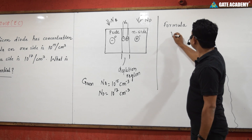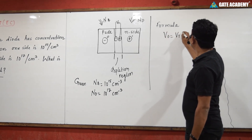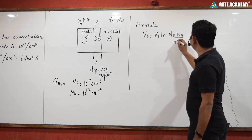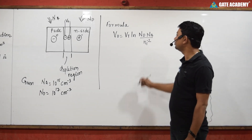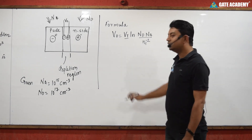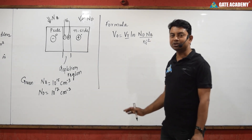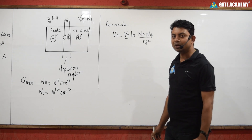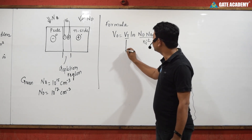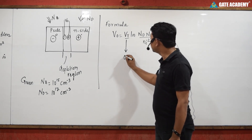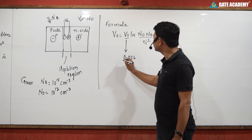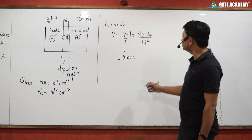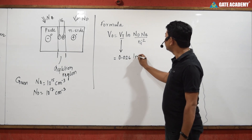The formula we will use directly — without derivation — is: V0 = VT × ln(ND × NA / Ni²). This is a very commonly used formula in EDC. Here VT is a constant; if no temperature is given in the question, we use VT = kT/q, which at room temperature equals 0.026 volts (26 millivolts) by the Einstein relationship.